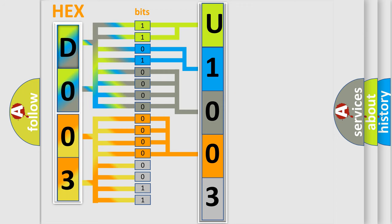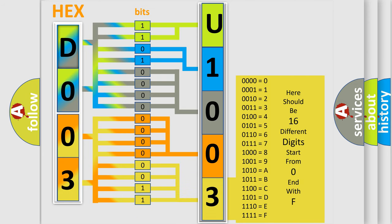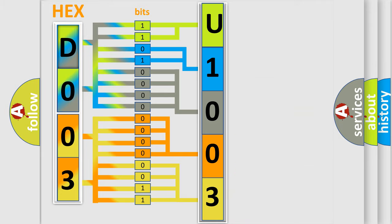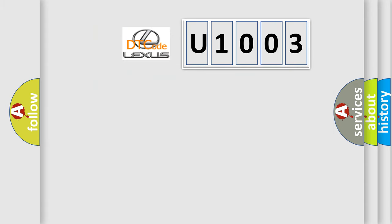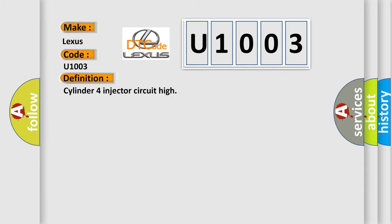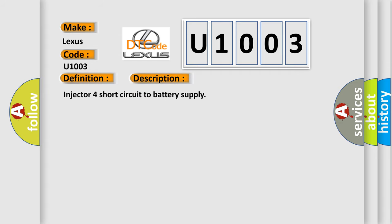A single byte conceals 256 possible combinations. We now know in what way the diagnostic tool translates the received information into a more comprehensible format. The number itself does not make sense to us if we cannot assign information about what it actually expresses. So, what does the diagnostic trouble code U1003 interpret specifically for Lexus car manufacturers? The basic definition is: Cylinder 4 injector circuit high. And now a short description of this DTC code: Injector 4 short circuit to battery supply.